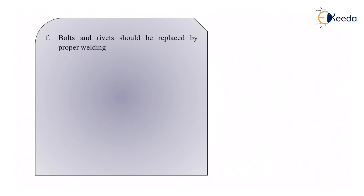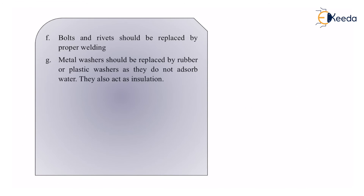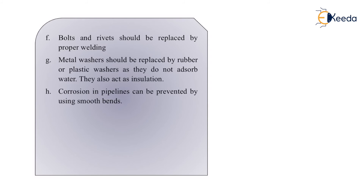Bolts and rivets should be replaced by proper welding. Metal washers should be replaced by rubber or plastic washers, as they do not absorb water and act as insulation — rubber and plastic are non-metals, are not corroded, and are not very reactive. Corrosion in pipelines can be prevented by using smooth bends instead of sharp bends, as seen even in domestic pipelines fitted in buildings. Heat treatment like annealing minimizes stress corrosion — if the metal has already been treated, no more stress will affect it.